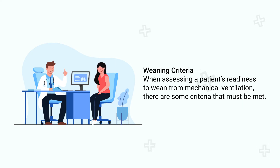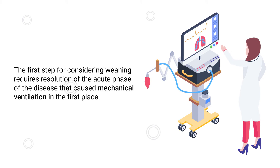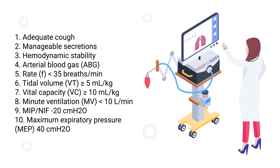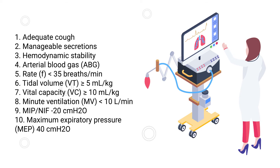When assessing a patient's readiness to wean from mechanical ventilation, certain criteria must be met. The first step requires resolution of the acute phase of the disease that caused mechanical ventilation. The patient must also have an adequate cough with manageable secretions and must be hemodynamically stable. If so, you can proceed to check additional criteria, including acceptable ABG results, frequency, and tidal volume.